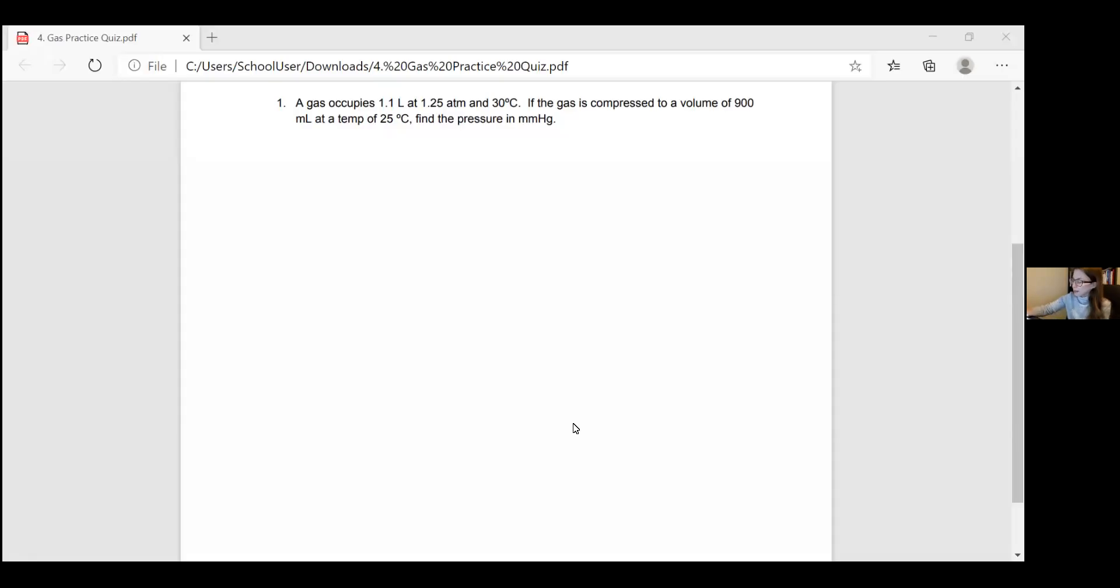Okay, number one. A gas occupies 1.1 liters, so that's a volume. At 1.25 atm, that's a pressure. And 30 degrees Celsius, that's a temperature.